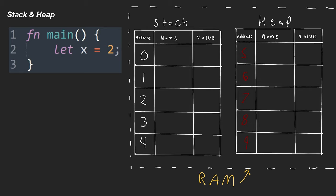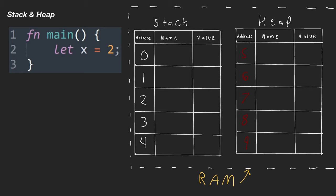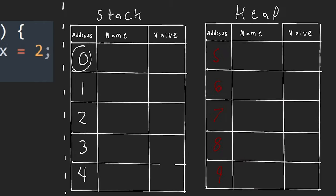Let's ignore the heap for now and look at what happens when we run a basic program in terms of storing information on the stack. The stack is a part of our random access memory. On the stack we have these little boxes — each has an address associated with it, and that's how we access different pieces of information. The addresses will be much longer in reality; I'm using simple ones for illustration.